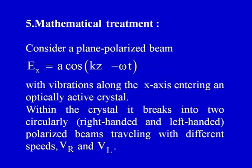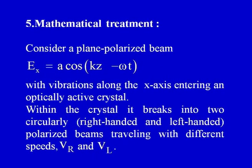Let us go through a mathematical treatment to make things more precise. Consider a plane polarized beam E_x = A cos(kz − ωt) with vibrations along the x-axis entering an optically active crystal, propagation along the z-axis. Within the crystal it breaks into right-handed and left-handed circularly polarized beams traveling with different speeds — V_R for the right-handed and V_L for the left-handed.